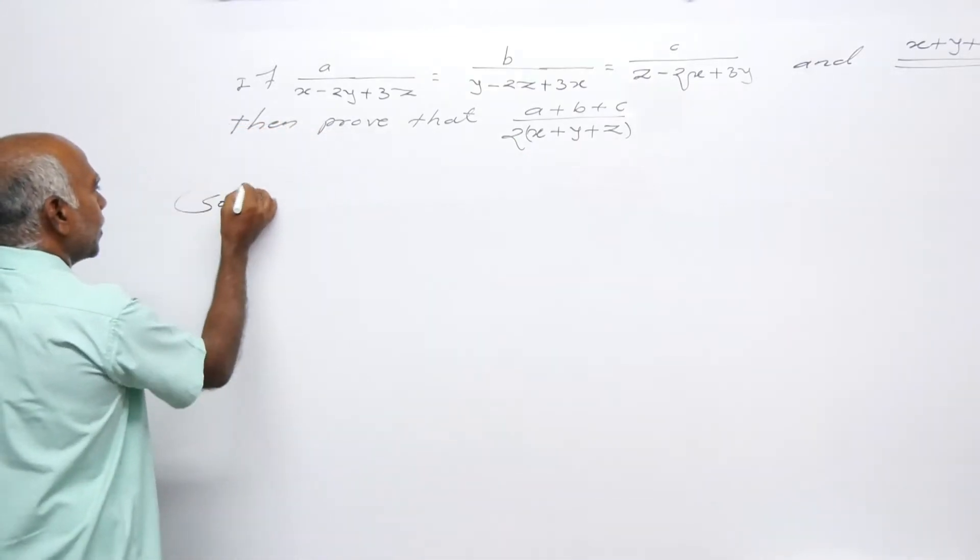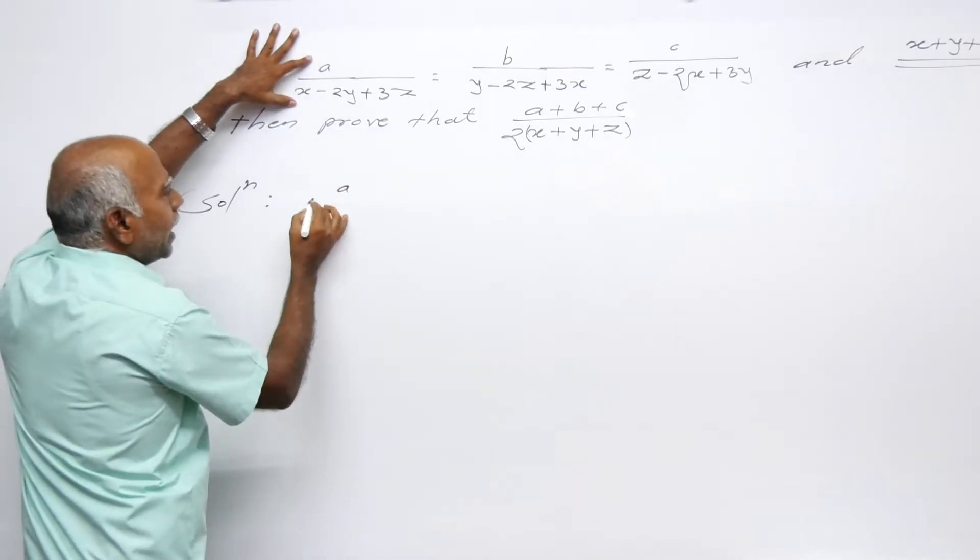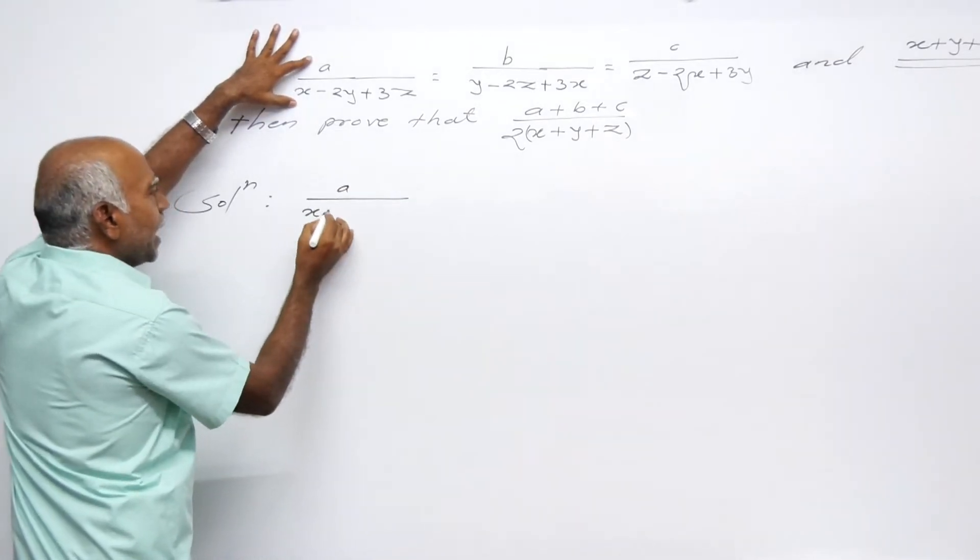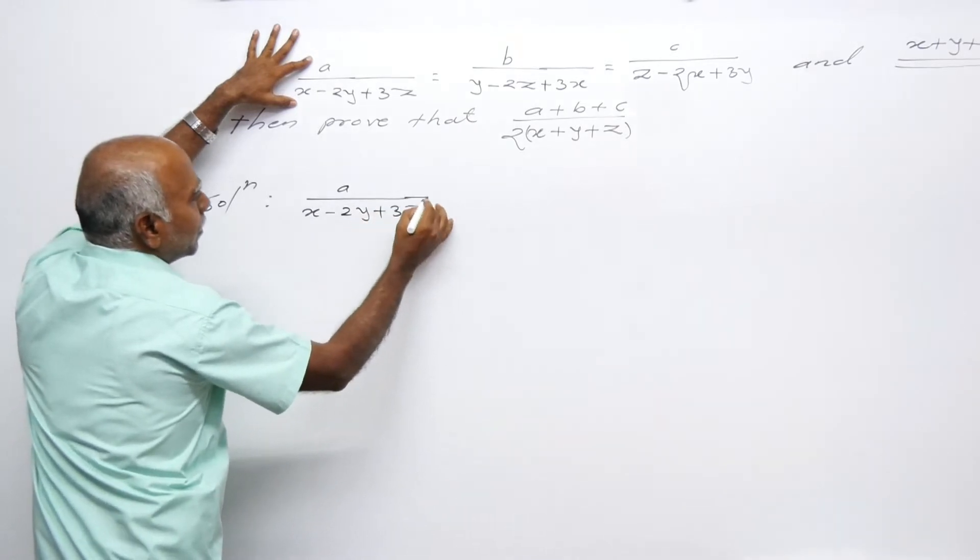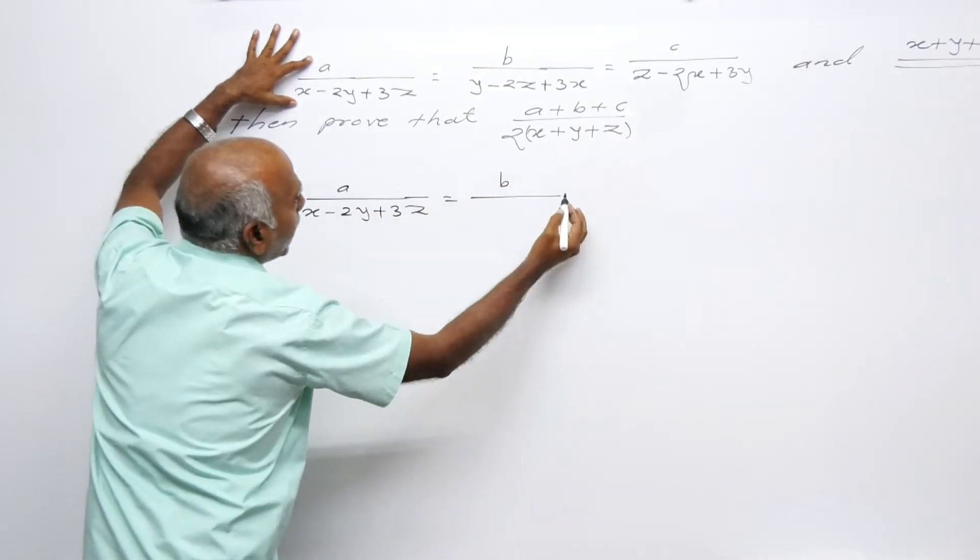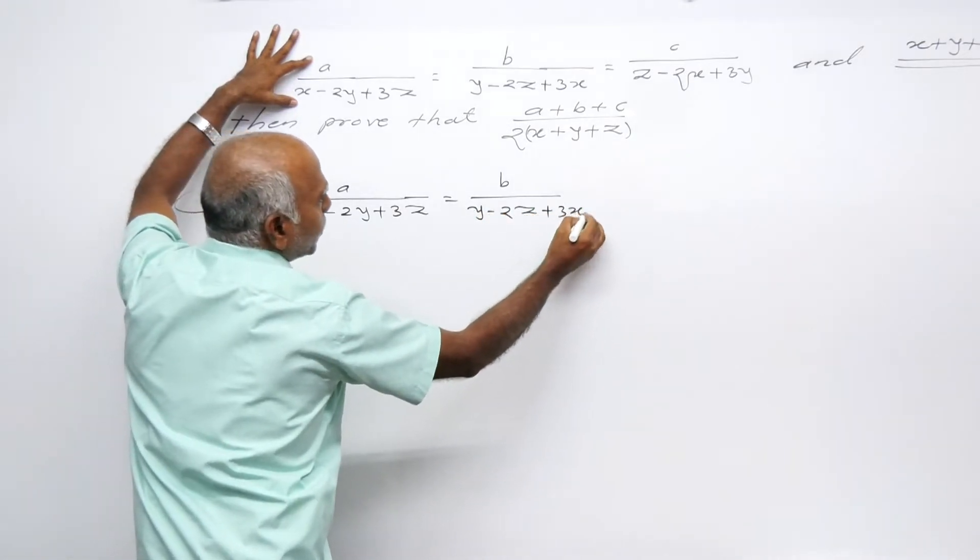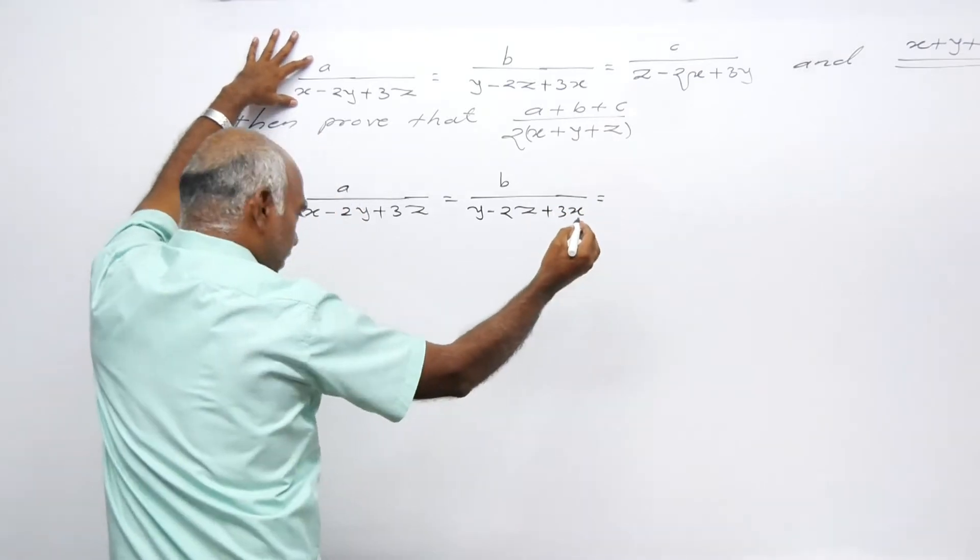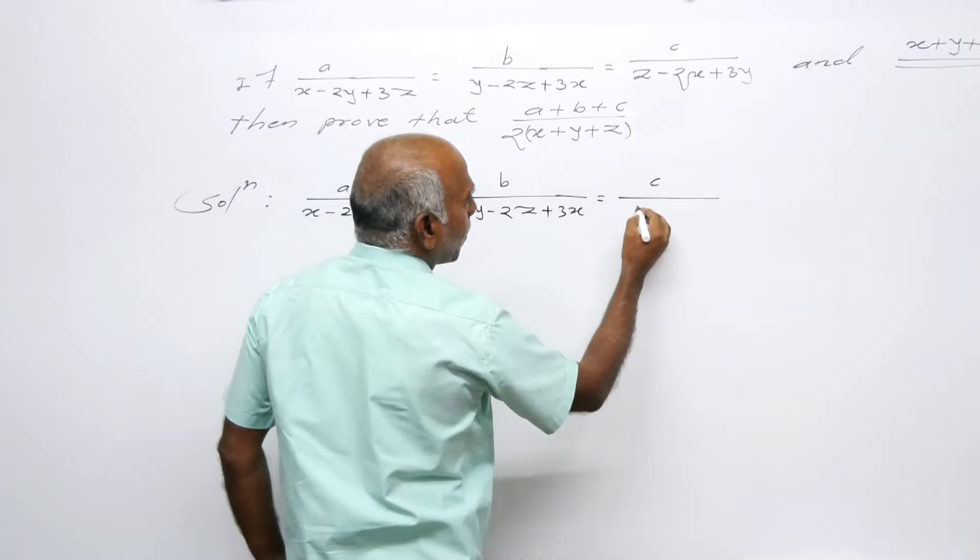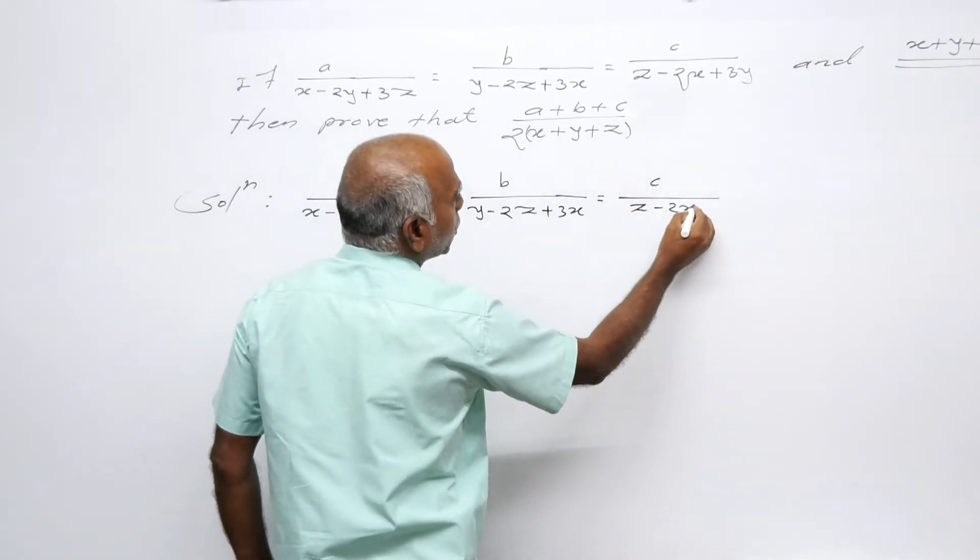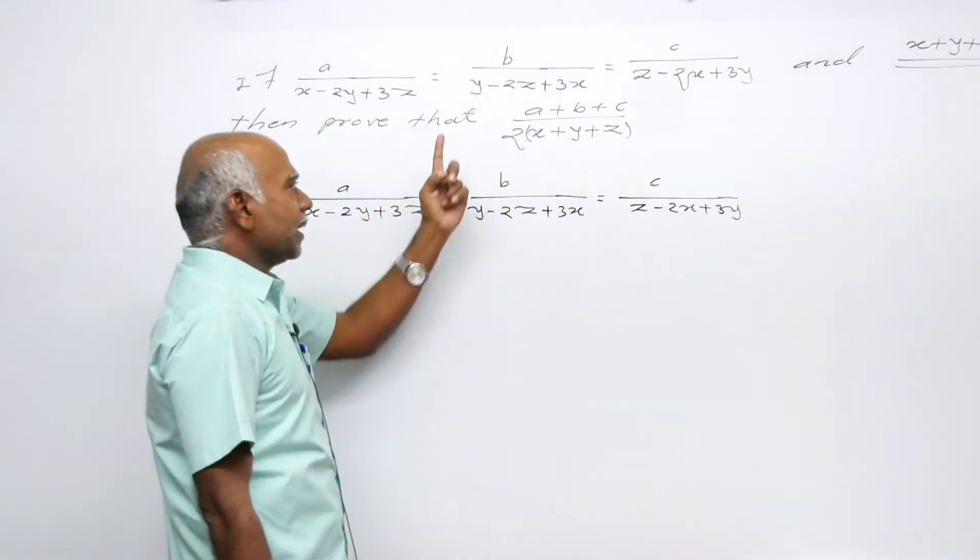In the solution, the first ratio is a upon x minus 2y plus 3z equals b upon y minus 2z plus 3x equals c upon z minus 2x plus 3y.